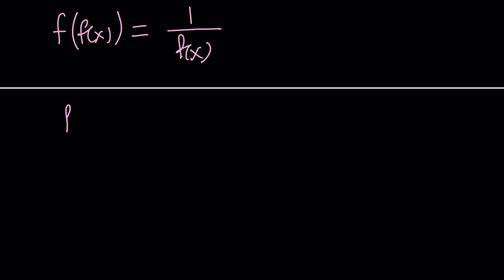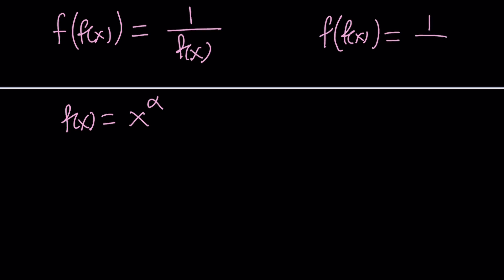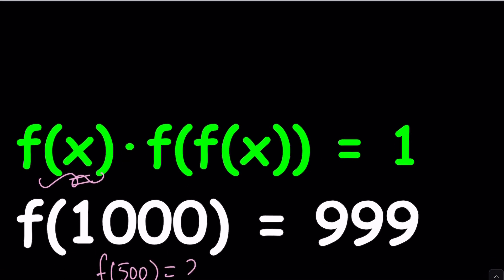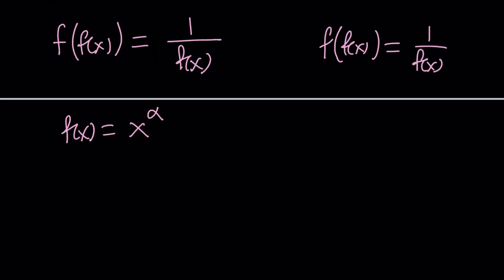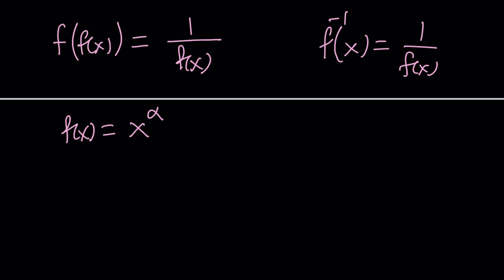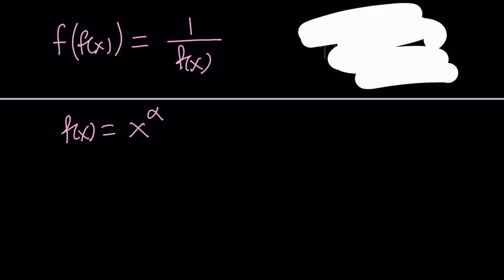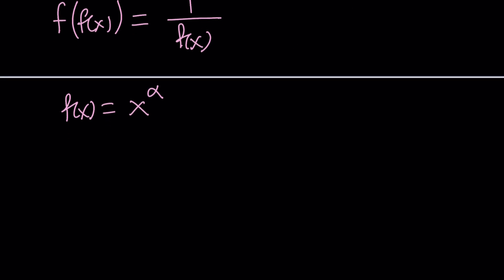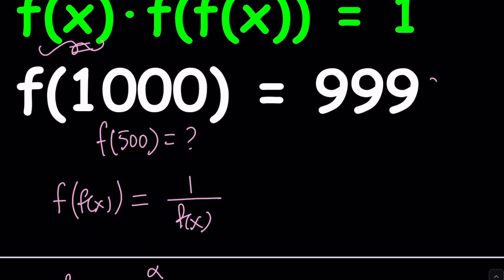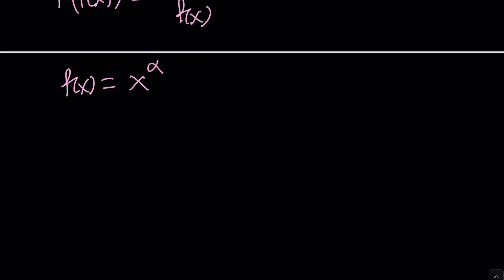Can f be something like x to the power alpha, where alpha is any real number — or even a complex number? Thinking about a problem like this, f inverse might equal 1 over f(x). When looking at a function like this, we could try some complex exponents, but that's a different story. If f(x) is something like x^alpha, does it satisfy this equation? Since we're given the specific point f(1000)=999, we probably need more parameters — something like alpha times x to the power beta seems more appropriate.